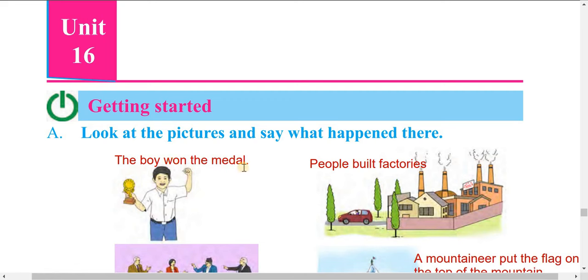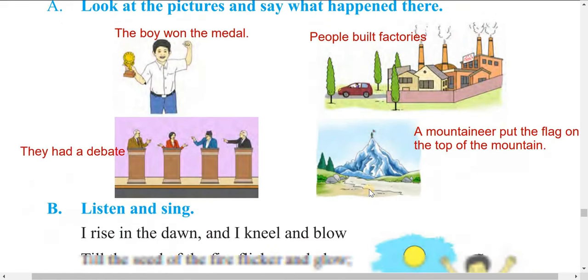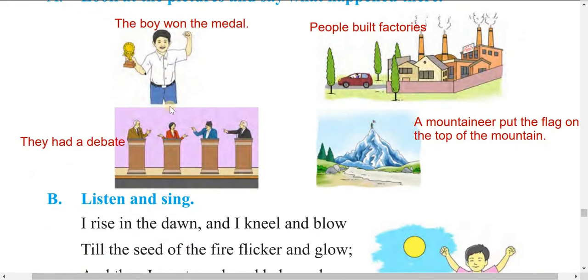In the second picture, you can see factories and smoke from the chimney. People built factories — we should use past tense here: 'people built factories.'